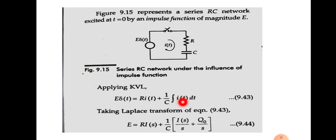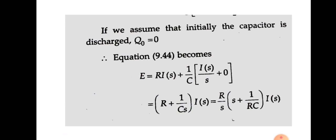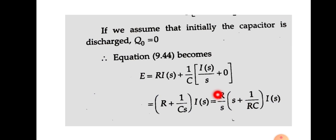So (1/C) times the Laplace transform of ∫I(T)dt gives I(S)/S plus initial condition Q₀/S, which is the initial charge on the capacitor. We assume the capacitor is initially uncharged, so Q₀ = 0. The equation becomes: E = R·I(S) + (1/C)·I(S)/S. Taking I(S) as common, we get: E = I(S)·[R + 1/(CS)]. Taking R/S outside, a term 1/(RC) appears, giving the equation for E in terms of I(S).